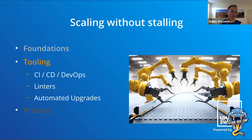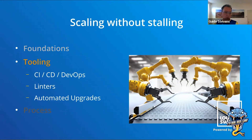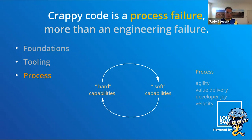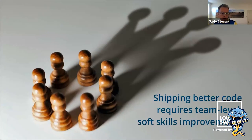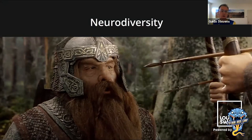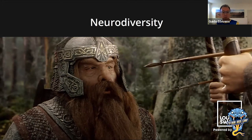Let's shift gears a bit. There's of course the technical aspect of tooling — continuous integration, continuous development, the whole DevOps thing, having linters, having automated upgrades. I'm skipping those aspects because while they're really important and foundational, I don't think that's where the bottleneck is. I think the bottleneck is that crappy code is a process failure more than an engineering failure — it's on the soft capabilities side. Shipping better code requires team-level soft skills improvements. That has to do with neurodiversity — software developers are often people who are more comfortable with computers than with other people, which is a shame because exactly this diversity in ways of thinking is a great asset. We should bring together developers who code with designers who design, but unfortunately those worlds are not that easily bridged.